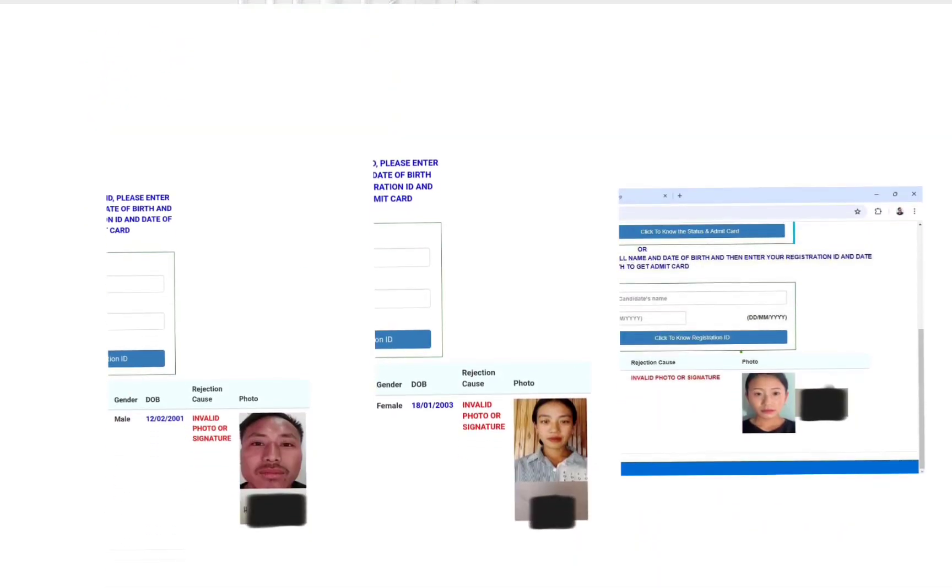Here, I have shown you the example of three of my students' application forms which are rejected by SSE. If you see the similarity between these three applicants, you will find that their face is not fully seen in the passport size photo.